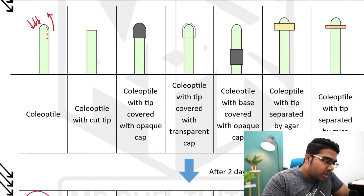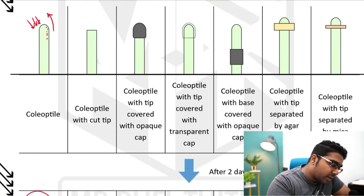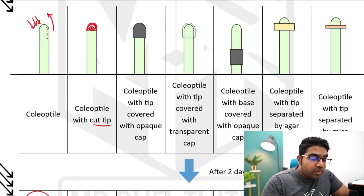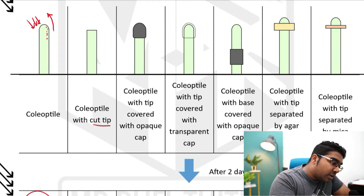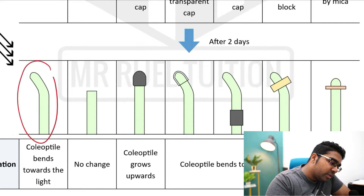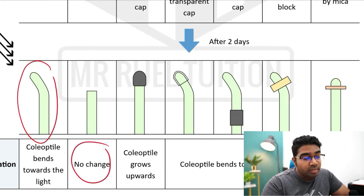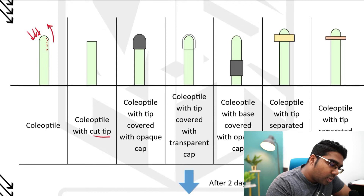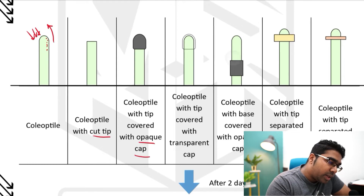In the second experiment, the coleoptile has a cut tip — the tip is removed. The significance of this is that the tip is where auxin is produced. So if we remove the tip, there won't be any auxin, there won't be any cell elongation, there will be no change — nothing will happen.